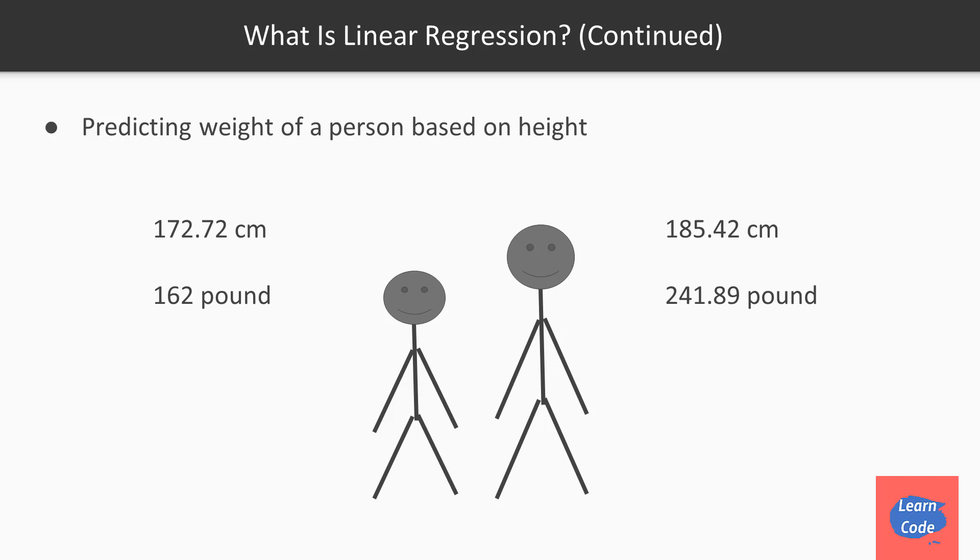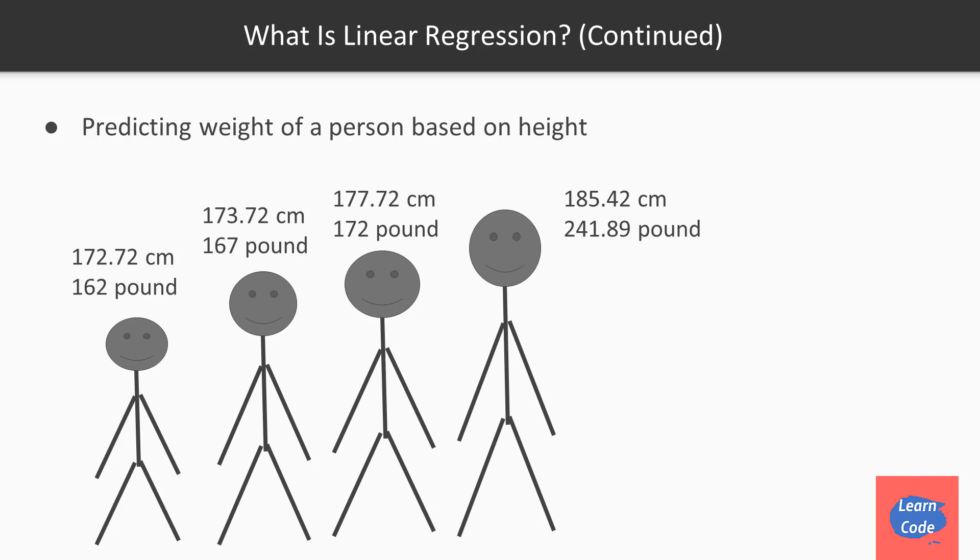Let's say the data set consists of only two people. The first one has a height of 185 and a weight of 241 pounds. The second one has a height of 172 cm and a weight of 162 pounds. Similarly, you create a wide range of data sets.